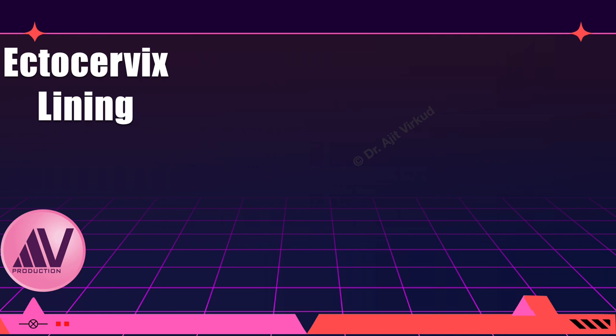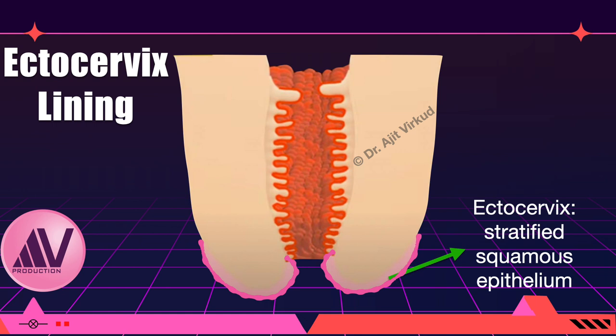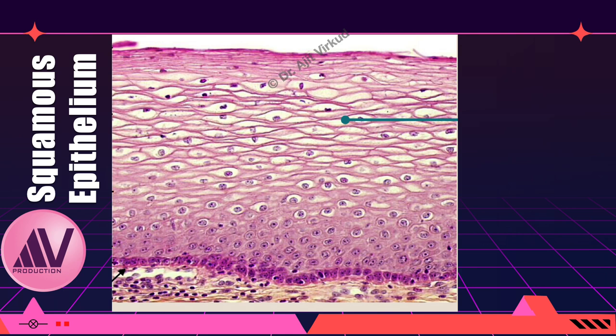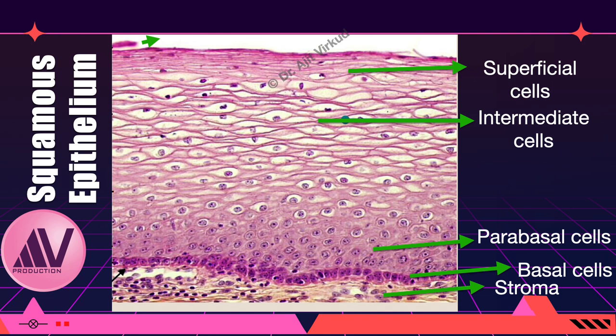As opposed to the endocervix, the ectocervix is lined by non-keratinized stratified squamous epithelium, depicted in the diagram by pink lining. These cells are not as prone to damage as endocervical columnar cells and are shed from time to time but not traumatized easily. The histological slide shows non-keratinized stratified squamous epithelium on H&E stain. It has different layers from inside outwards: basal layer, parabasal cell layer, intermediate cell layer, and layer of superficial cells. Since this has bearing on vaginal cytology or Pap smear, I will not dwell further on this aspect.